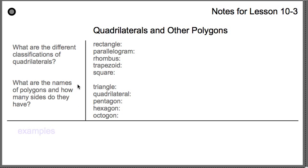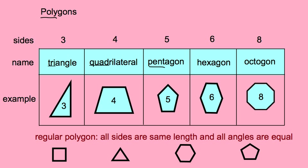The next question is: what are the names of the polygons and how many sides do they have? Here are the polygon names we're going to be looking at — just write a number next to each one. Triangle, quadrilateral, pentagon, hexagon, octagon — they all have a certain number of sides. As you find out, you can add them to your notes.